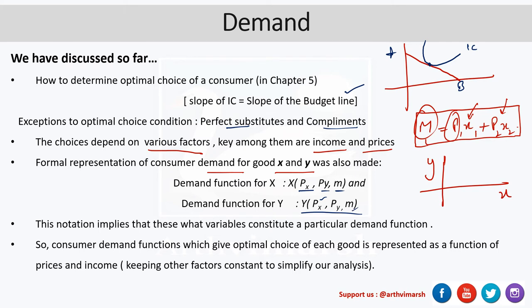Now this notation basically helps us in understanding a particular demand function. A function can be constructed with variables like taste and preferences or any other variable you can think of. So this is how we represent our demand function. A consumer demand function which gives optimal choice of each good is represented as a function of price and income. So this has already been emphasized.